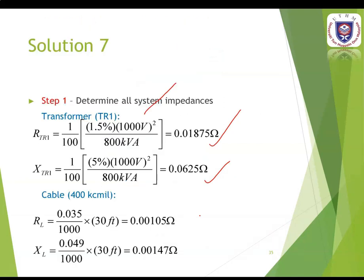You insert the value from the table and you get the resistance as 0.00105 ohms and the reactance as 0.00147 ohms. Next is the cable for the 8 AWG. You refer to the 600 volt table to identify the resistance and reactance values for the 8 AWG cable.